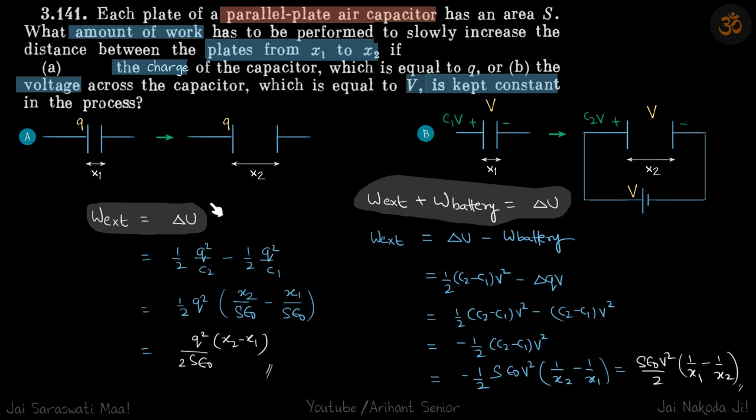Here the work is done on the system by the external force and the battery as well. So here the gain in potential energy is work done by external forces plus work done by battery. We need to find work external in both cases, so the formulas are going to be different.